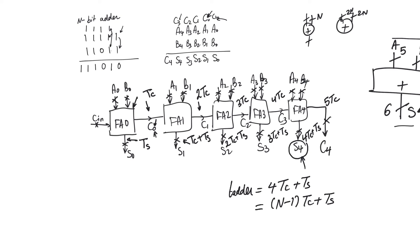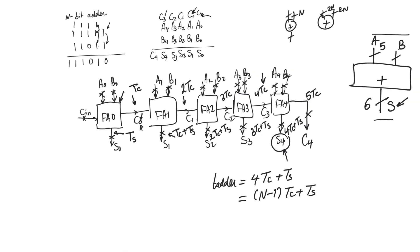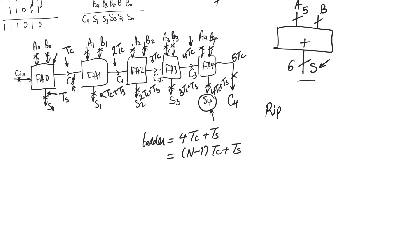So the delay of the adder is 4TC plus TS. And if we generalize this for any n-bit adder, it's obvious that the delay is going to be (n-1) TC plus TS. The 4 here is 5-1, because we are taking n-1 carry delays for the input carry of the last full adder to be ready, and then one final sum delay to prepare the final sum bit.